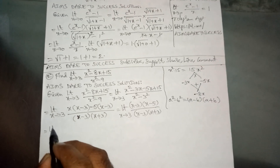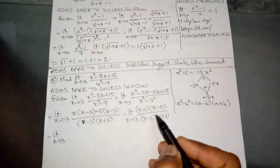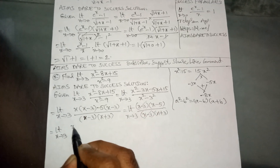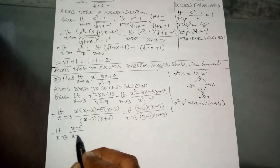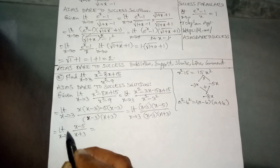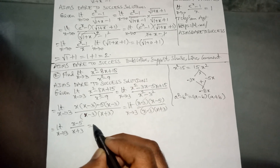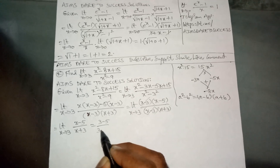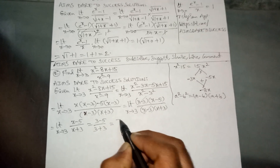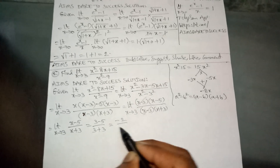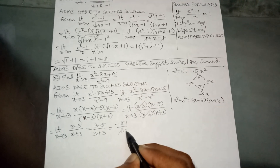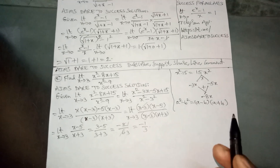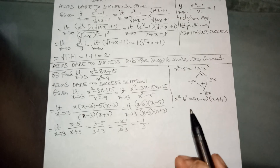The (x - 3) terms cancel, leaving limit x tends to 3 of (x - 5) by (x + 3). Now substitute x = 3: we get (3 - 5) by (3 + 3), which is minus 2 by 6. The answer is minus 1 by 3. Thank you my dear friends.